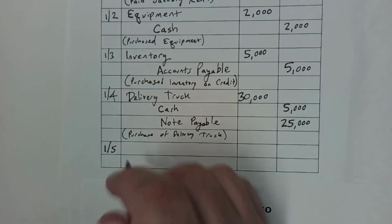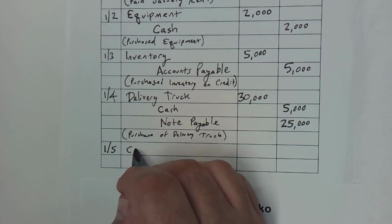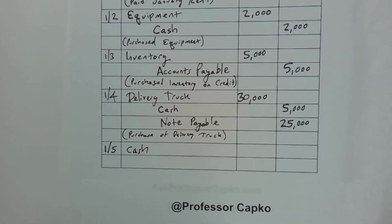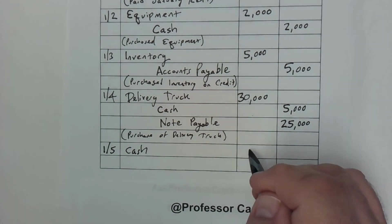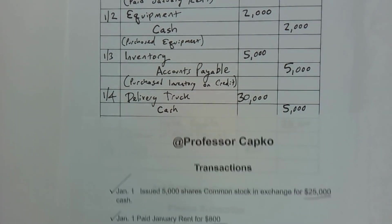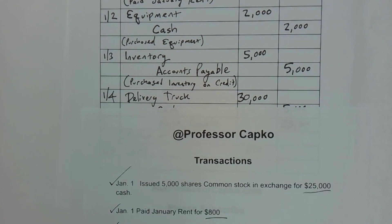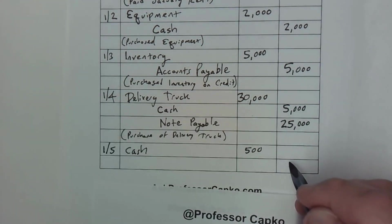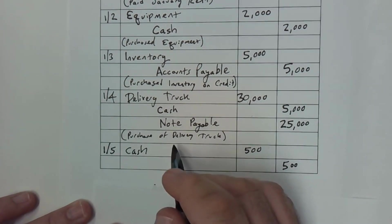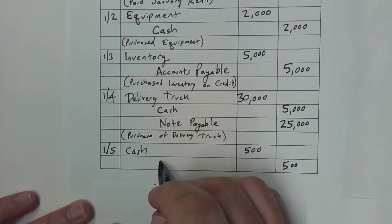So on January 5th we're going to debit cash, and that's for the $500. And we're going to credit an account for $500, and that's going to be a revenue account. So I'm going to indent and put revenue.